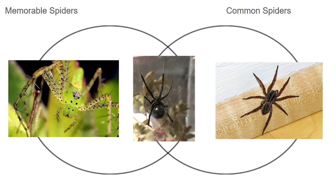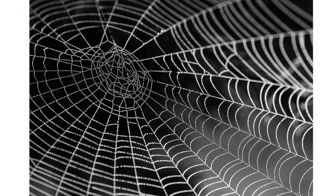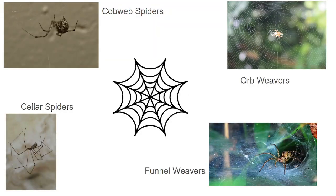The easiest place to start, in my humble opinion, is looking at a spider's web. Spider webs are very important — they're part of what makes spiders one of the most successful groups of animals in the world. Being able to see whether a spider is or is not in a web is actually very telling in terms of what type of spider it may be. Some spiders are almost always found in webs, and some are almost never found in webs.